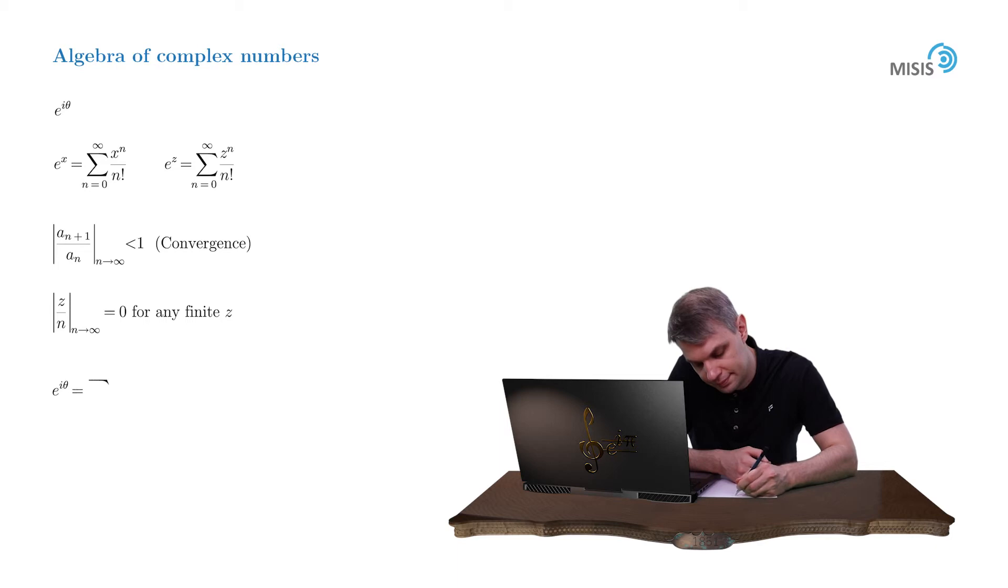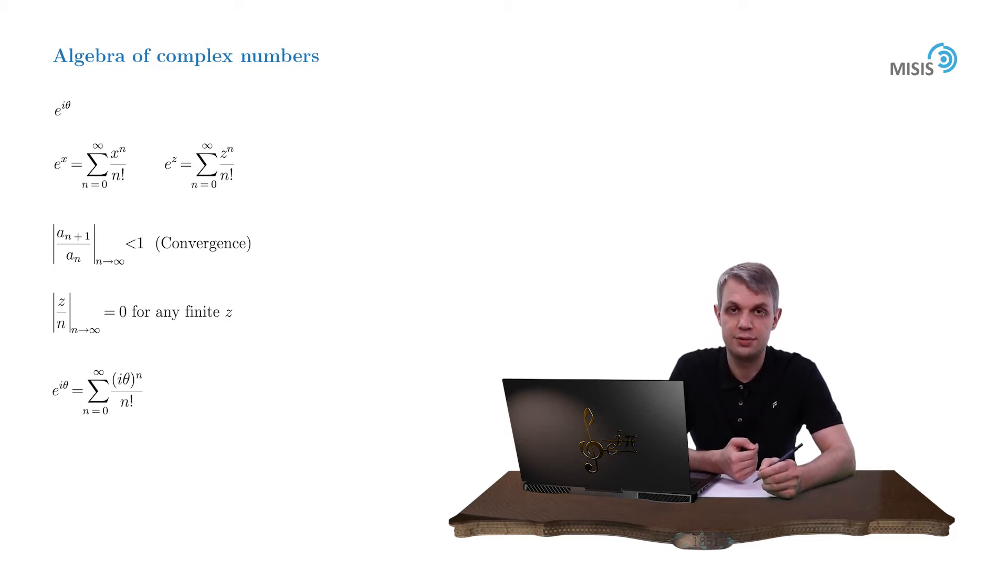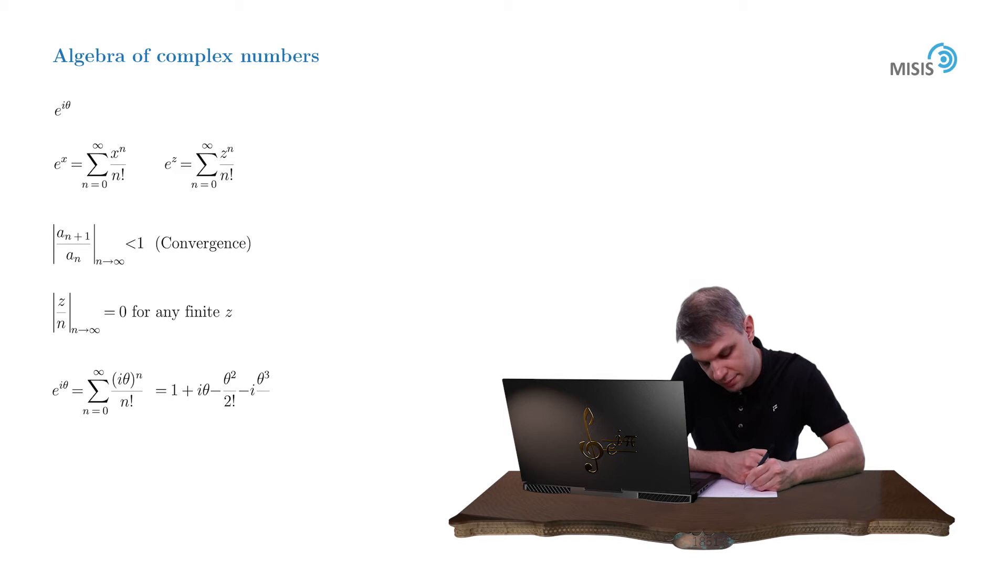So let's write it down. And now to better understand the structure of the Taylor series, let's write down its first six terms. So we obtain 1 plus i theta minus theta squared by 2 factorial minus i theta cubed by 3 factorial plus theta to the power of 4 by 4 factorial plus i times theta to the power of 5 over 5 factorial and so on.